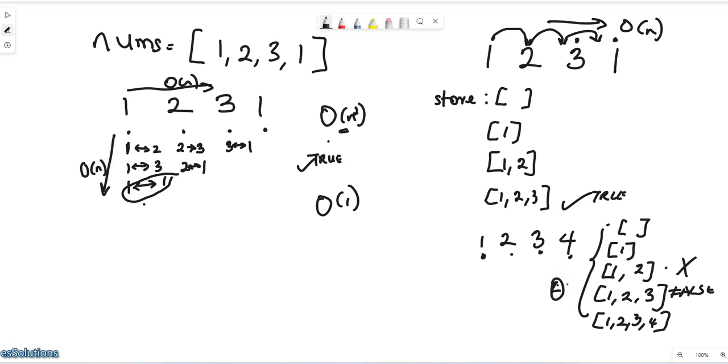So it means that my space complexity for this is going to be O of n. So for the time is O of n and for space also O of n, whereas for the first approach the time is O of n square and the space is O of 1, constant time.